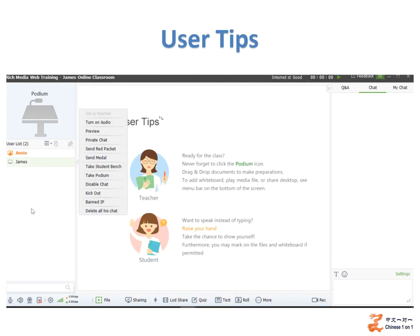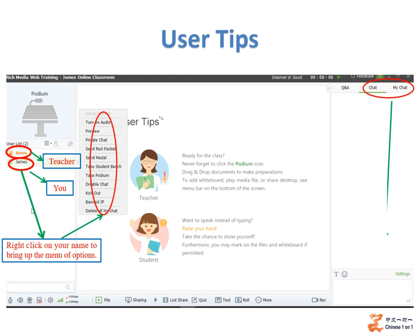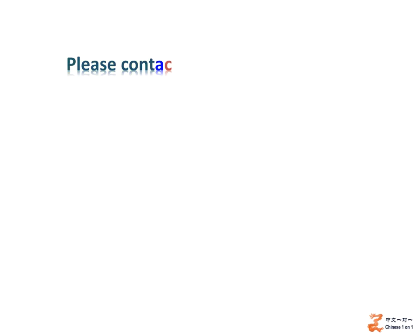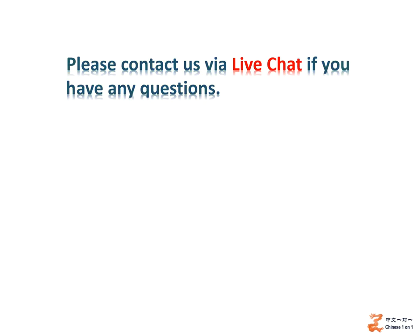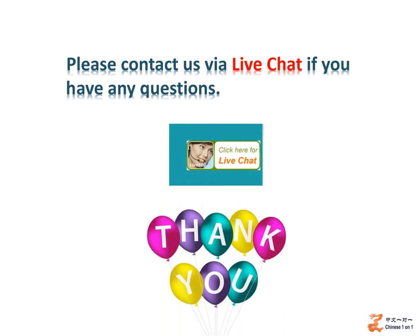Some user tips: right-click on your name to bring up the menu of options. You can chat with others. Use the close key X to exit the classroom. Please contact us via live chat if you have any questions. Wish you a happy learning journey on Chinese One-on-One.